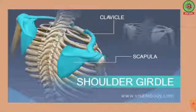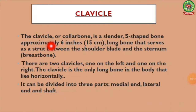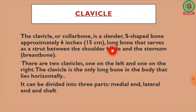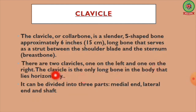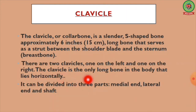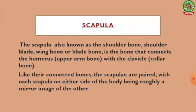The clavicle, or collar bone, is a slender S-shaped bone approximately six inches (15 centimeters) long that serves as a strut between the shoulder blade and the sternum. There are two clavicles, one on the left and one on the right. The clavicle is the only long bone in the body that lies horizontally. It can be divided into three parts: the medial end, the lateral end, and the shaft.